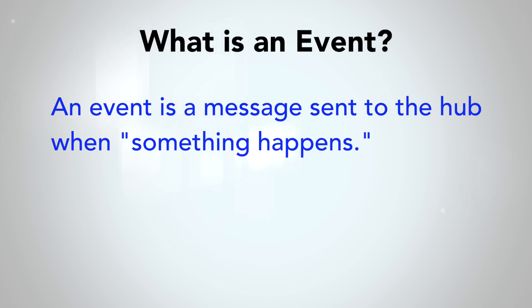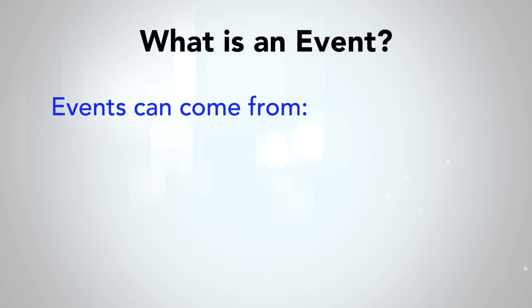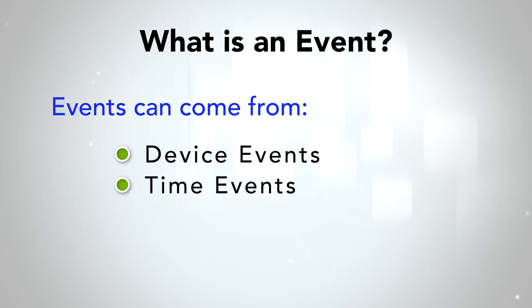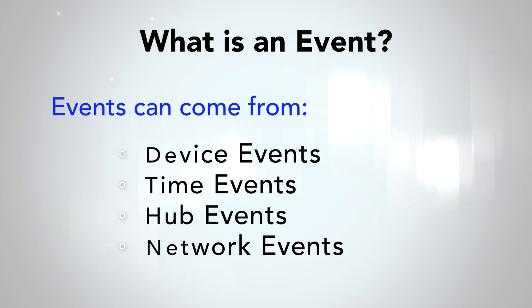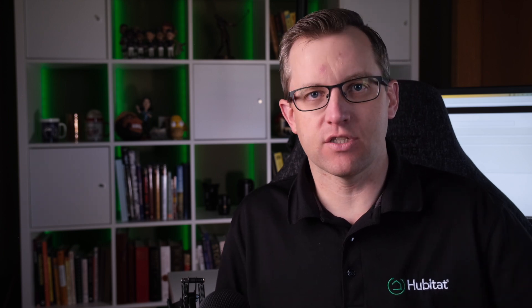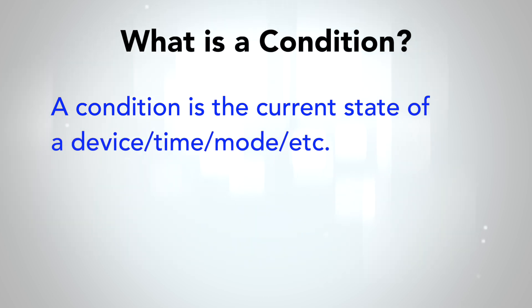Before we add this to our rule, we first need to understand the difference between conditions and events. An event is something that happens that sends a message to the hub. It can be device driven, such as a motion sensor sensing motion. It can be time driven, such as sunrise or when the clock strikes a specific time. The hub can create its own events, such as when a mode changes, and it can receive events from the connected network. But all of these events occur in a moment of time, in an instant. Conditions, on the other hand, are not a moment in time. Devices always have a condition — conditions are simply the current state of a device, the current time, or the current state of whatever you're trying to evaluate.